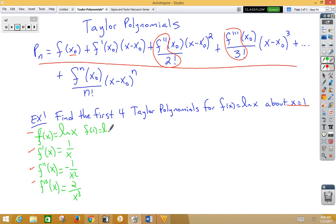We need f prime of 1, which would be just positive 1. We need f double prime of 1, which would be negative 1, and f triple prime of 1, which would be 2.